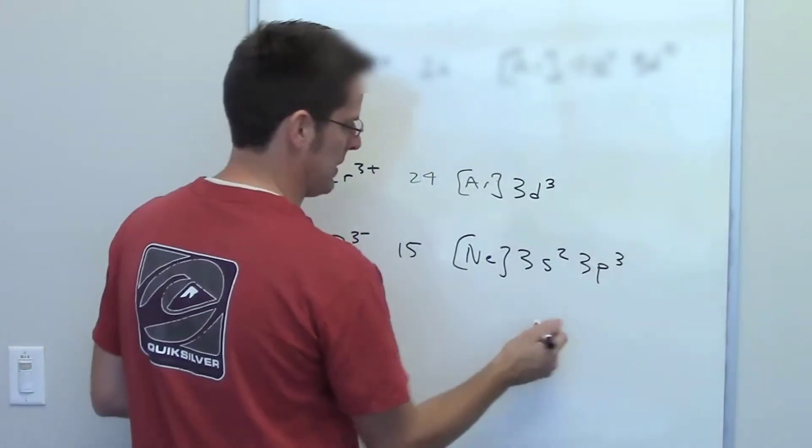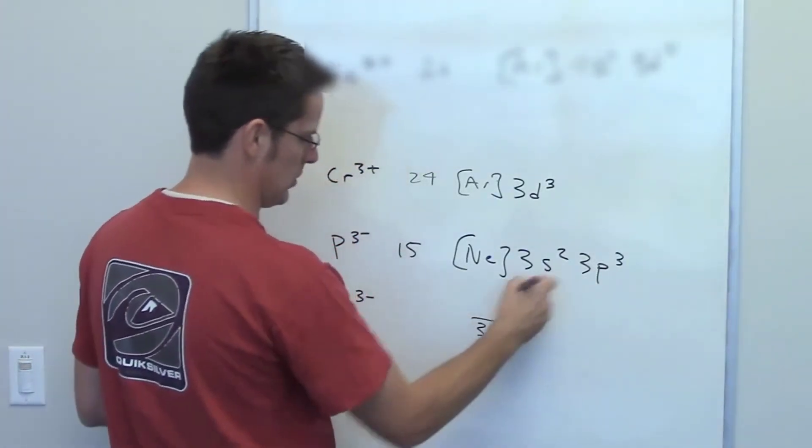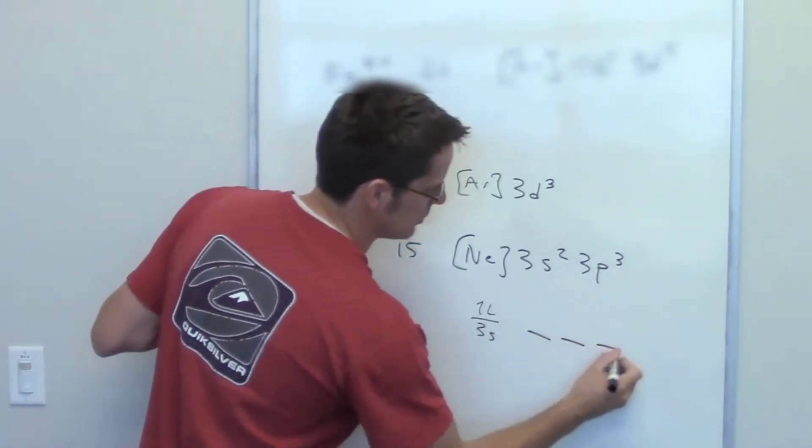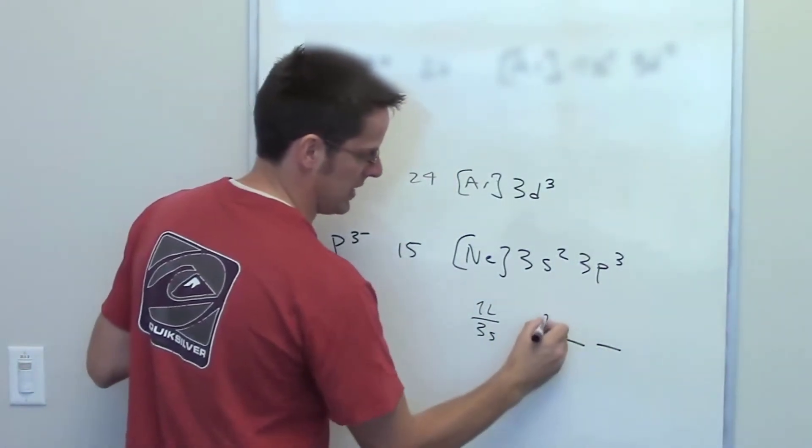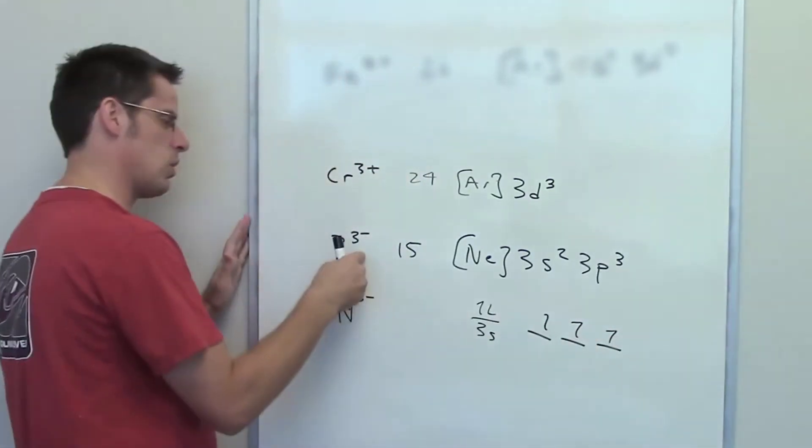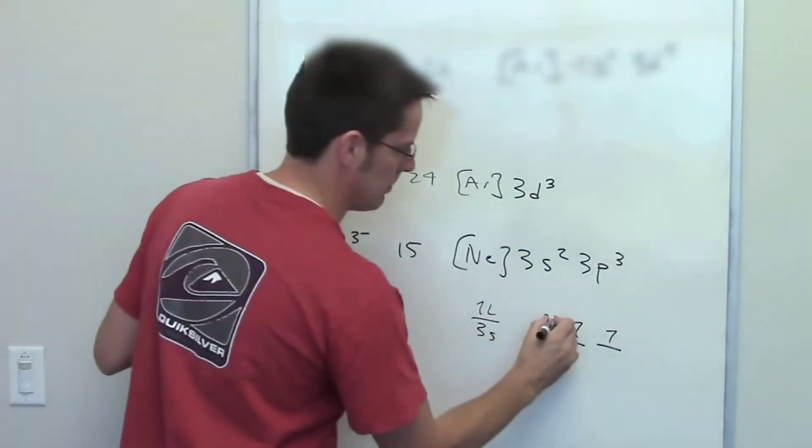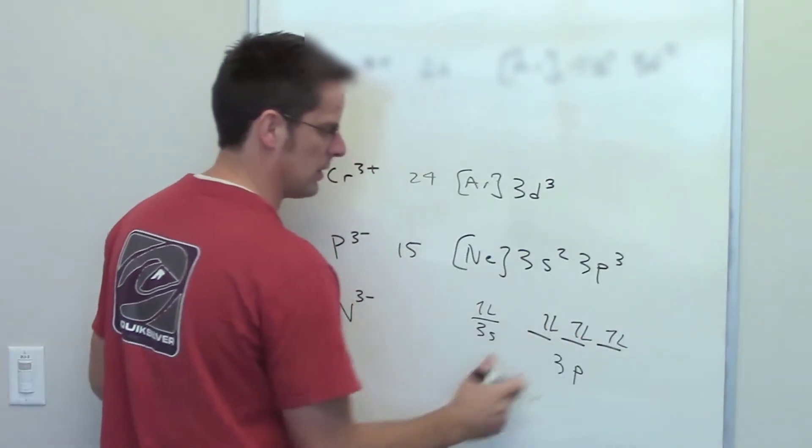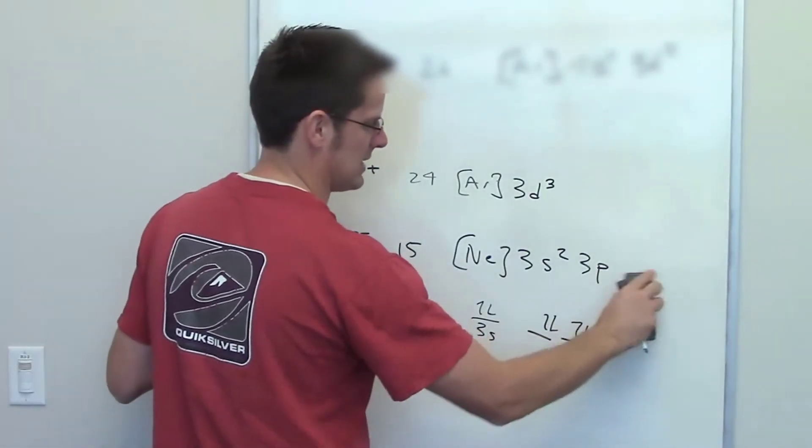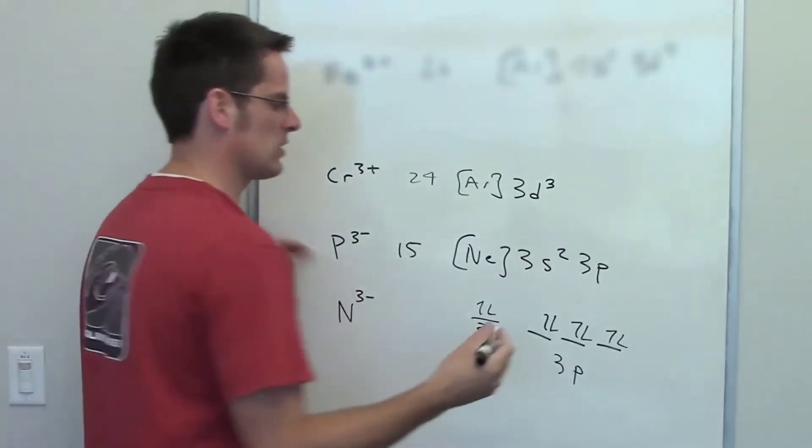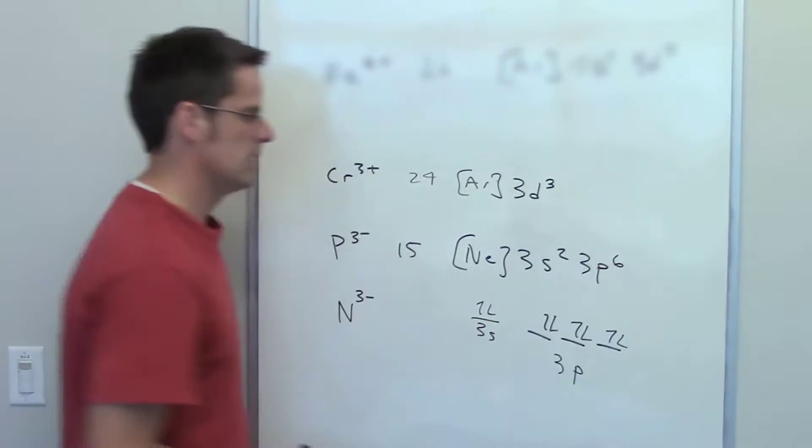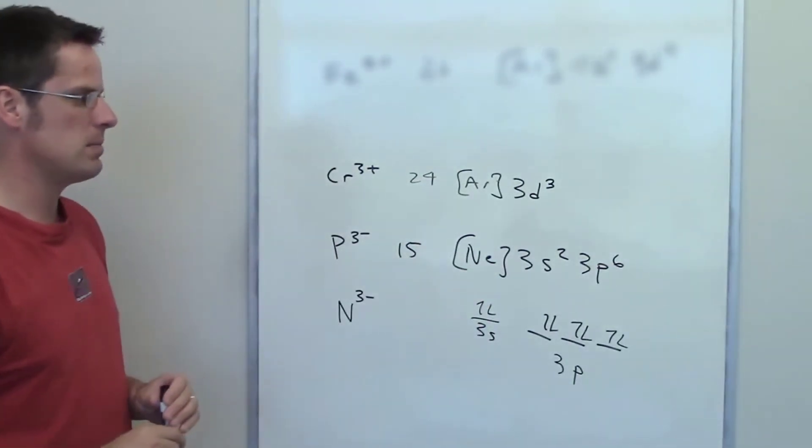In its 3p's it of course has a 3s. The 3s has two electrons in it that have to be paired. It has three individual 3p orbitals. It's got three electrons in them. When it absorbs three new electrons the only place that those can go are also going to be in our 3p orbitals. So what that means is that phosphorus 3-, electron configuration when it has three electrons added to it is going to be neon 3s2, 3p6.